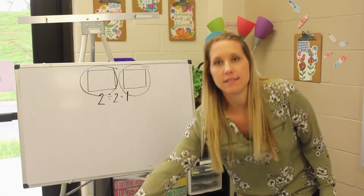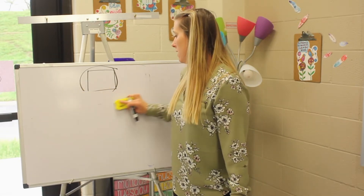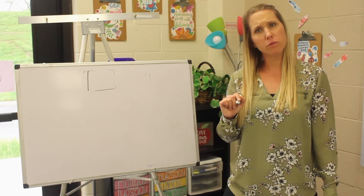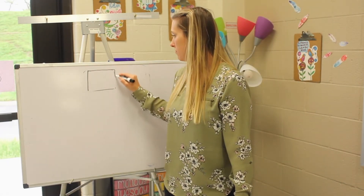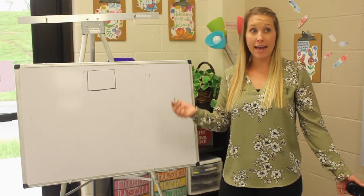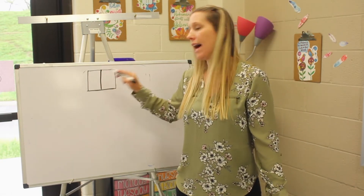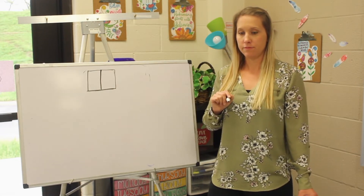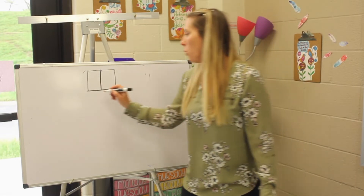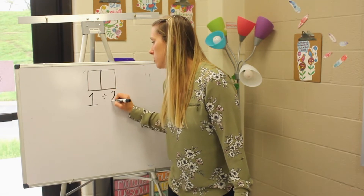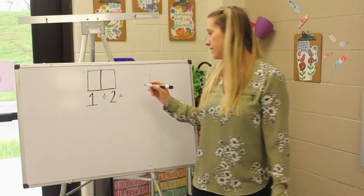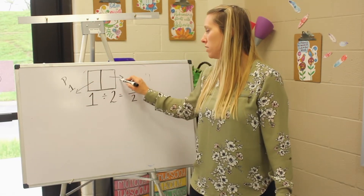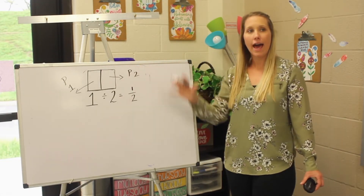Now imagine that instead of two crackers, we only have one. If we have one cracker and we want to split it between two people, how would we share that cracker equally? We would have to split it in half. Each person would get one half of the cracker. Now see if you can write that in the form of a division sentence.